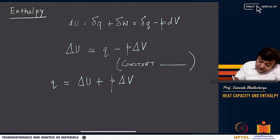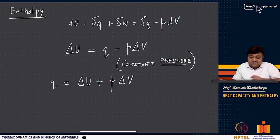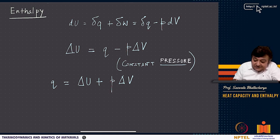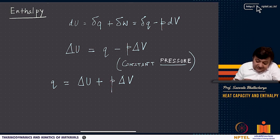We are considering constant pressure processes. At constant pressure, delta u equals q minus p * delta v, so q equals delta u plus p * delta v. The heat q differs from delta u by the amount p * delta v.